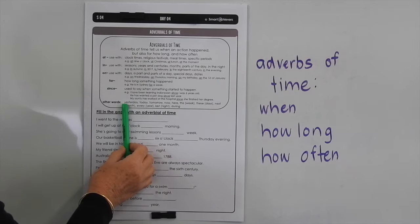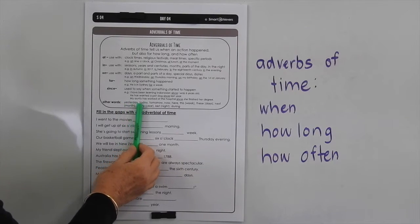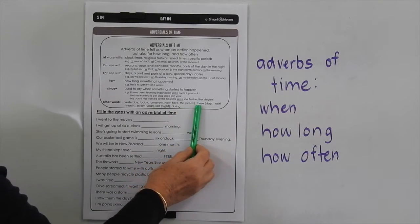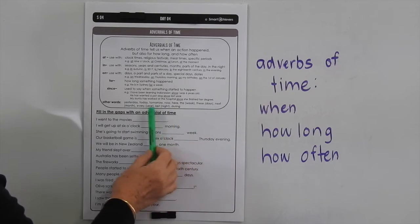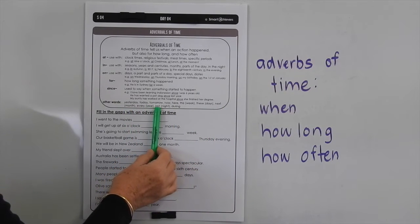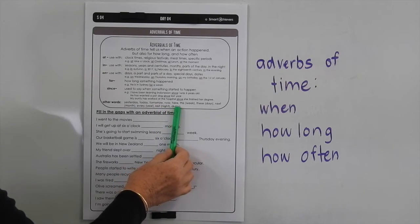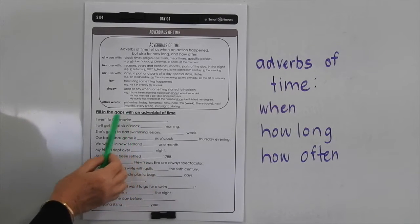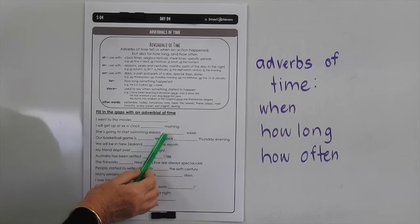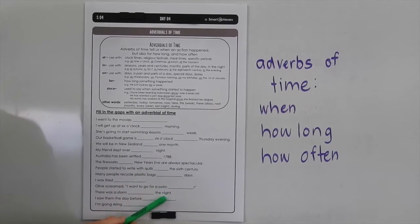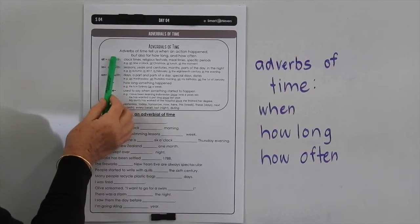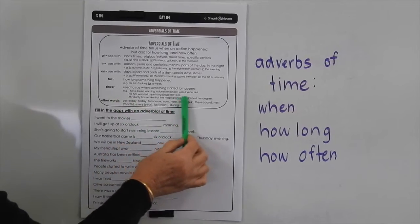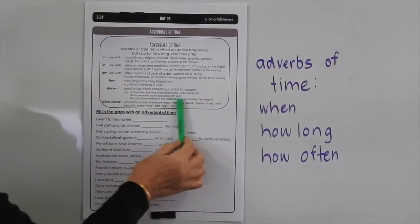There are a lot of other words we can use too that are adverbs of time: yesterday, today, tomorrow, now, here, this — as in this week — these — as in these days — next — as in next month — every — as in every year — last night, and during. Read the sentences and you'll quite naturally work out the correct word to finish each one. If you get stuck, use the words and suggestions provided, plus there's a whole pile of other words at the bottom — don't forget to use them as well.